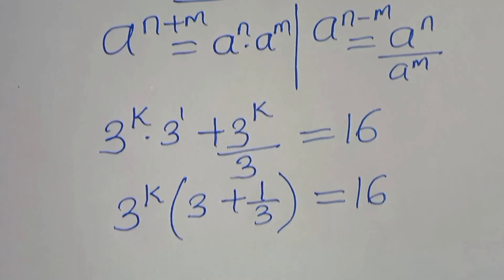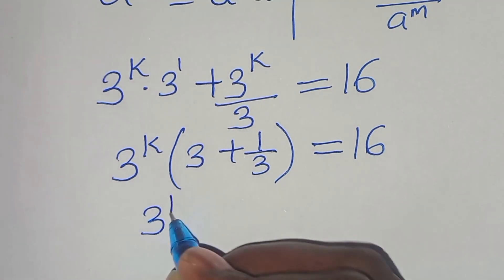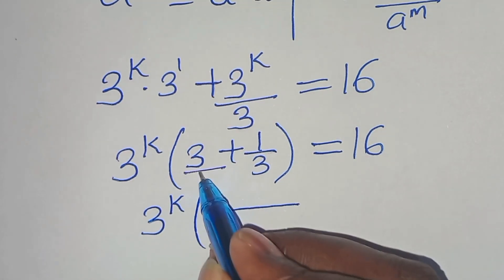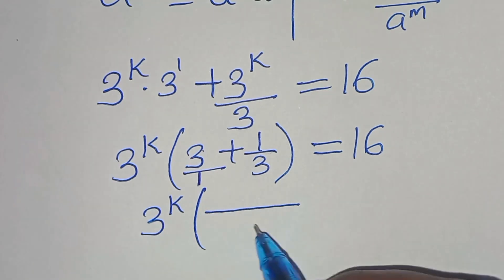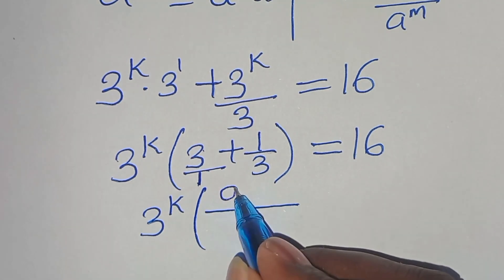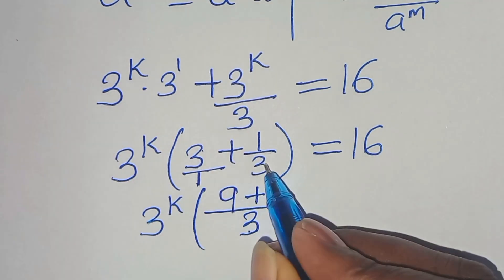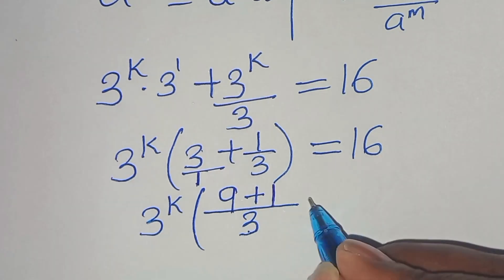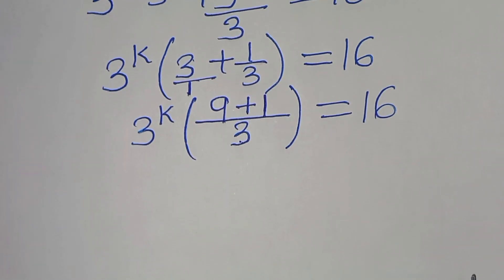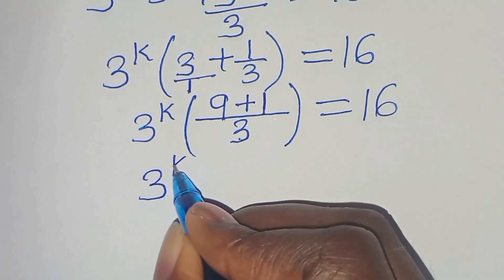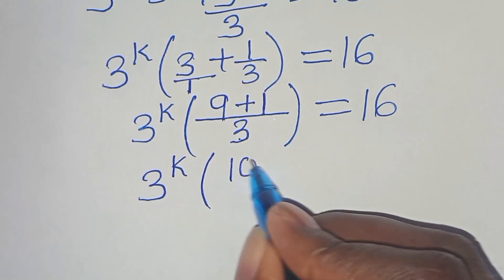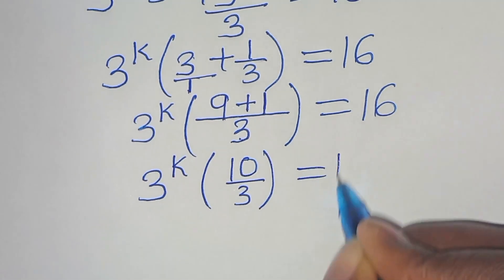Inside the parentheses we have 3 (written as 3/1) plus 1/3. The LCM is 3, so this becomes (9 + 1)/3 = 10/3. Therefore we have 3^k times (10/3) = 16.